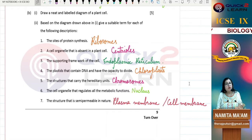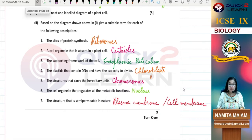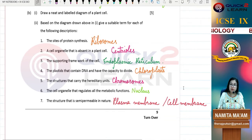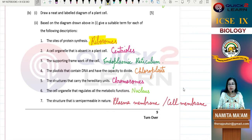The first is: The sites of protein synthesis. Proteins are synthesized in a cell, the sites of protein synthesis are the ribosomes. Then, a cell organelle that is absent in a plant cell. Which organelle is not in a plant cell?